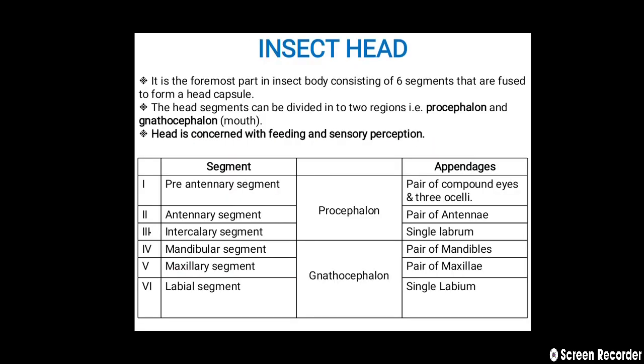The insect head is the foremost part of the insect body, consisting of six segments that are fused to form a head capsule. The head segments can be divided into two regions: the procephalon and the gnatocephalon (meaning the mouth). The head is concerned with feeding and sensory perception.